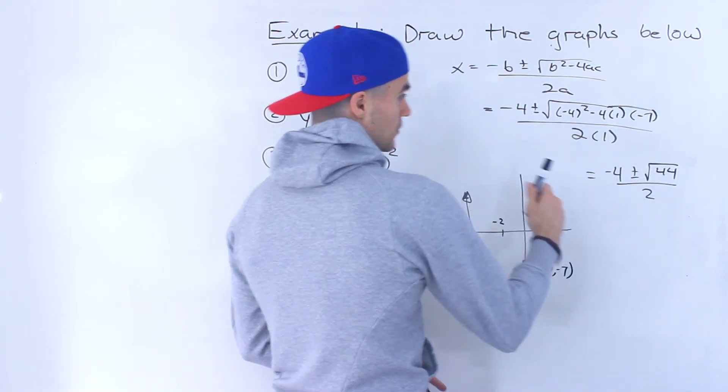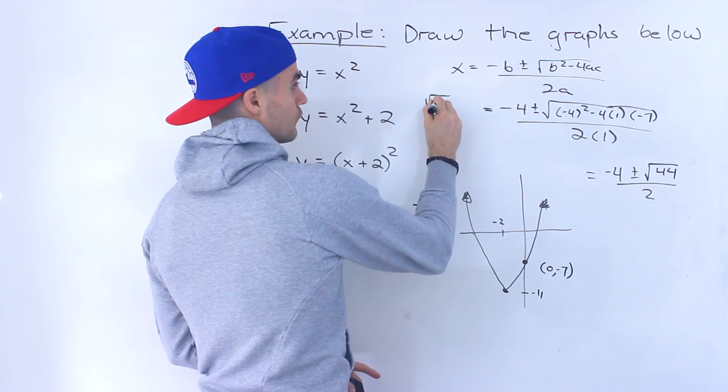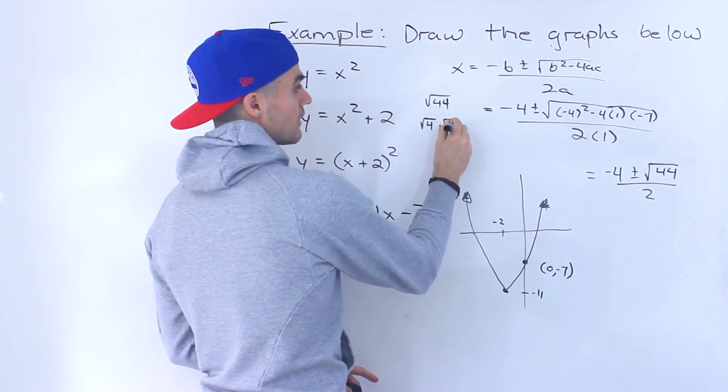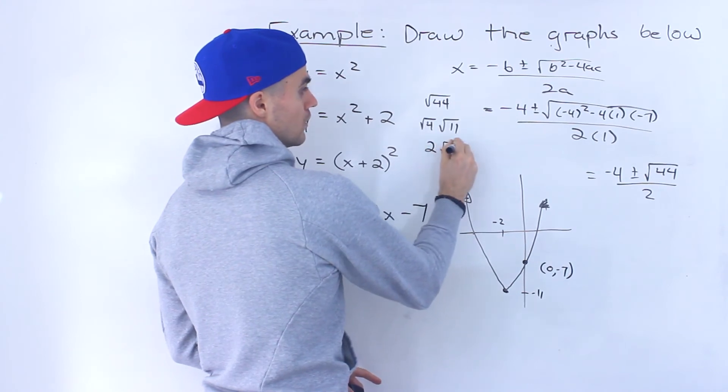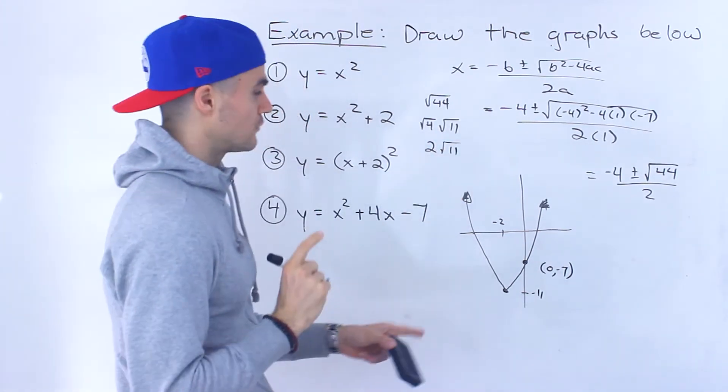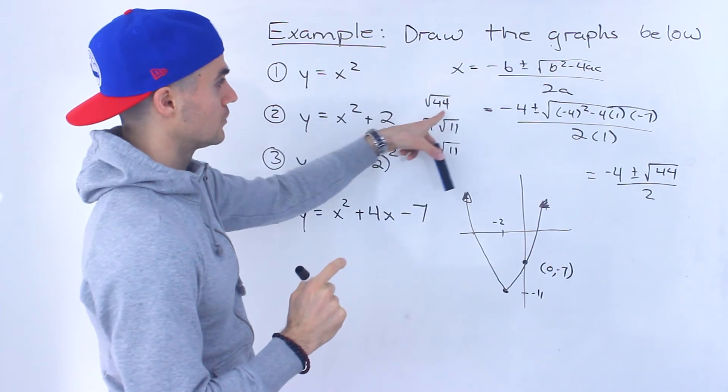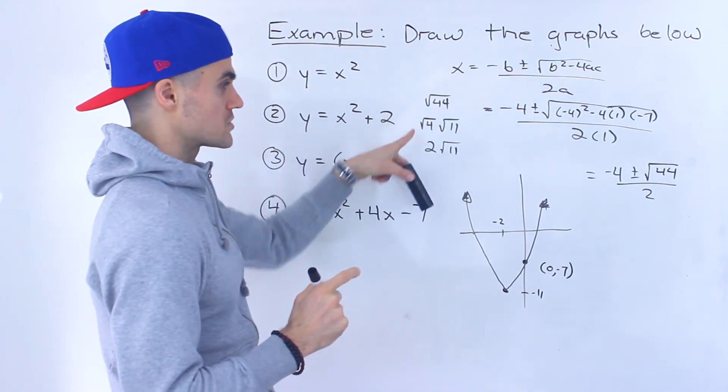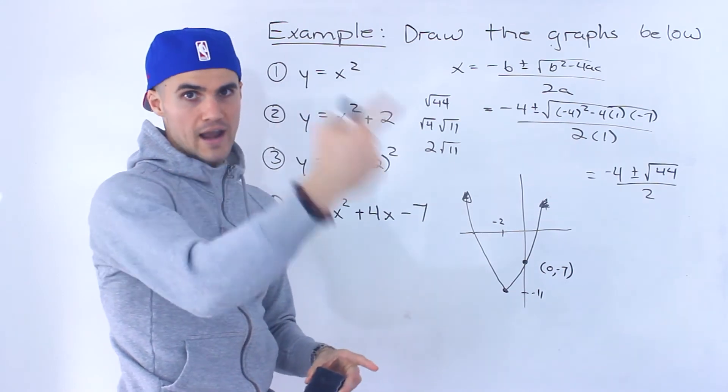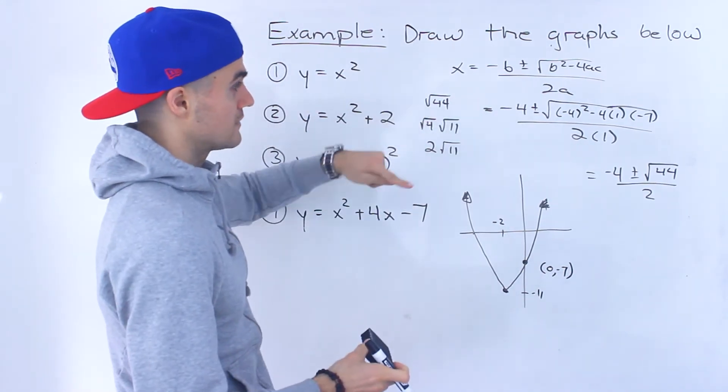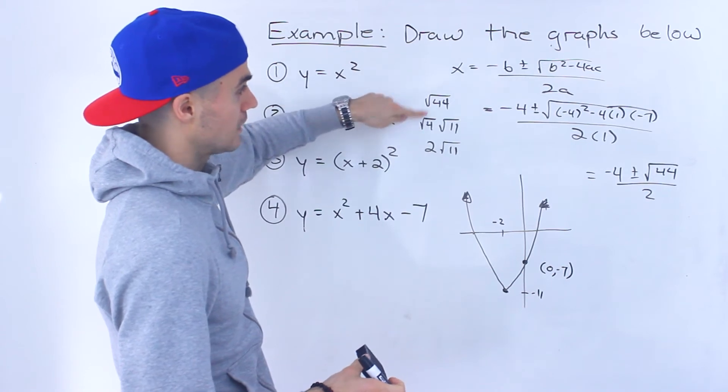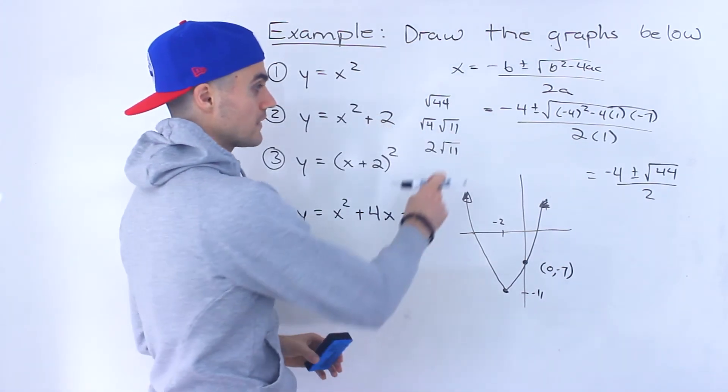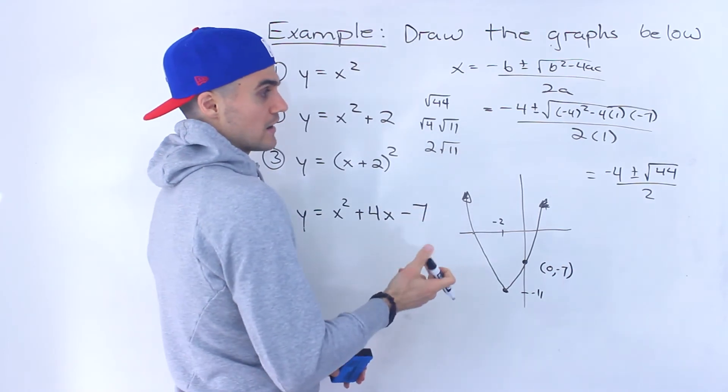But we could simplify this further because this radical, root 44, we can actually rewrite that as root 4 times root 11, and then root 4 is 2. If you remember simplifying radicals, you can take a radical and you could try to split it up into a rootable number. Rootable numbers being like 4, 9, 16, etc. Now 44 can't divide by 9, can't divide by 16, but luckily it can divide by 4, and we'd be left with an 11 there. And then root 11, you can't simplify any further.